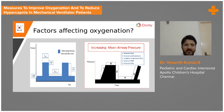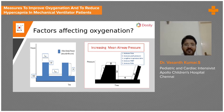Here you can see a square waveform. A square waveform can be a flow-time scalar or a pressure-time scalar. Because there is no negative deflection, this is definitely not a flow-time scalar — so this is a pressure-time scalar with a square waveform in pressure control mode, where the pressure is constant.